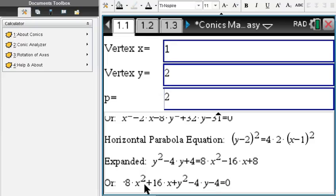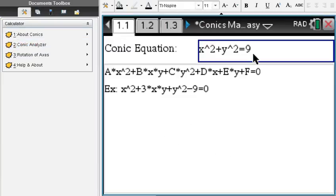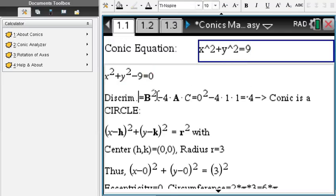However, if you are given a quadratic equation like you normally are, you're going to use a conic analyzer and enter the equation such as x² + y² = 9. Everybody knows that makes a circle.